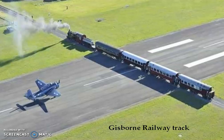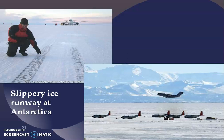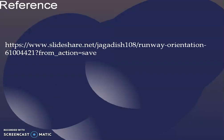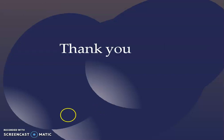Here in Gisborne, a railway track is crossing the runway. And there is also a slippery ice runway at Antarctica. Whatever I have shown here, I have taken it from SlideShare. Thank you.